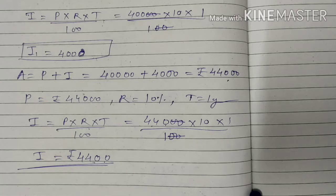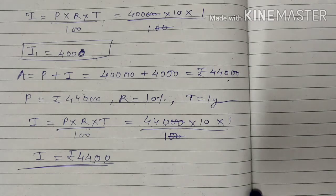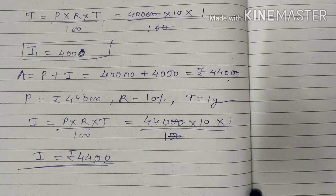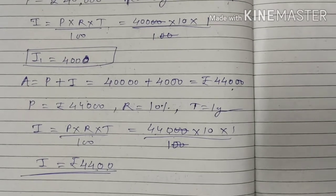Our next question is question number 9: Calculate the compound interest for the 2nd year on Rs. 15,000 invested for 5 years at 6% per annum. It is a similar type of question, so we will apply the same method we have just learned.